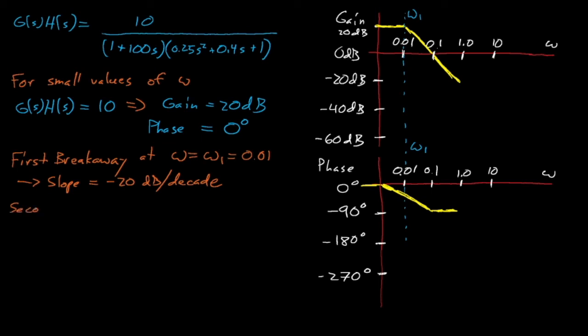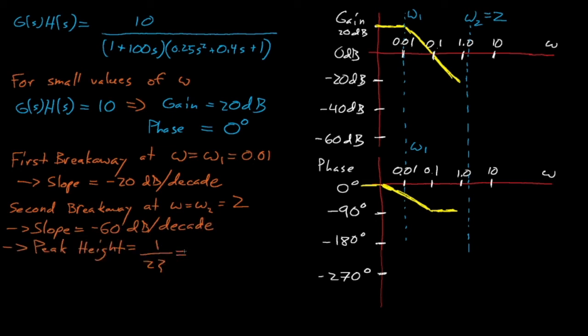At omega 2, our gain shifts from a negative 20 decibels per decade slope to a negative 60 decibels per decade slope, and we also see a small peak in the gain due to the complex conjugate components. The height of this peak is 1.25, which equals roughly 2 decibels.